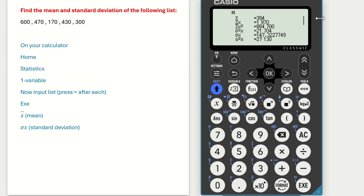So our mean is 394, standard deviation 147. That's how to find the mean and standard deviation on the Casio calculator.